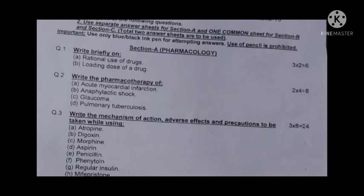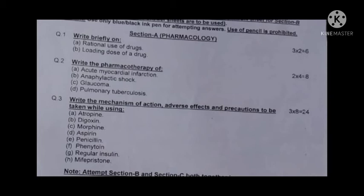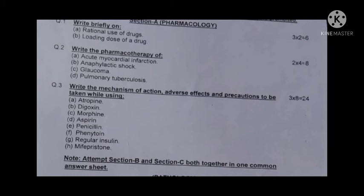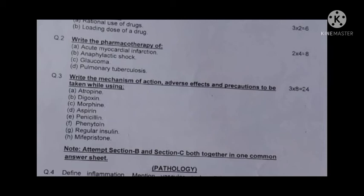Second question continued: (b) anaphylactic shock, (c) glaucoma, (d) pulmonary tuberculosis. Third question: write down mechanism of action, adverse effects, and precautions to be taken while using (a) atropine, (b) digoxin, (c) morphine, (d) aspirin, (e) penicillin, (f) phenytoin.